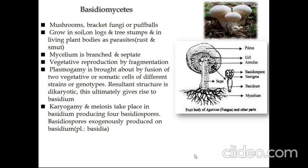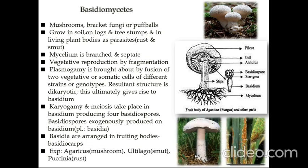Basidiospores are exogenously produced on basidia. Basidia are arranged in fruiting bodies known as basidiocarps. Some examples are Agaricus (mushroom), Ustilago (smut), and Puccinia (rust). Smut and rust cause diseases to plants, so they are harmful.